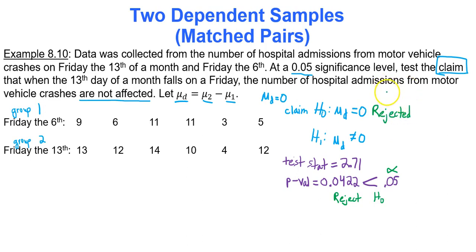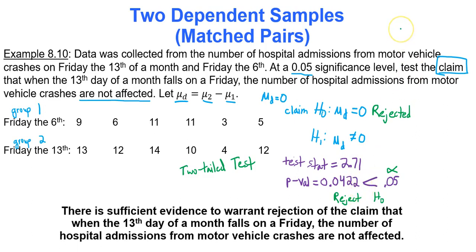Take that rejected stamp you have and just put it right over the null. So basically we rejected our claim. There is evidence to reject our claim here. So once again, we literally just typed in our data values into the Google Sheets spreadsheet. And then we noted that this is a two-tailed test because they used not equal to in the alternative hypothesis. That gave us our test statistic, gave us our p-value. We noted that we had to reject the null hypothesis. Which means that there is sufficient evidence to warrant rejection of the claim that when the 13th day of a month falls on a Friday, the number of hospital emissions from motor vehicle crashes are not affected.